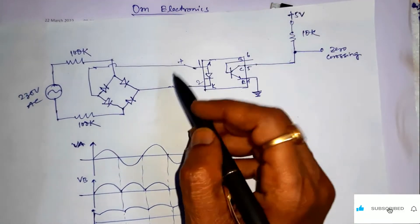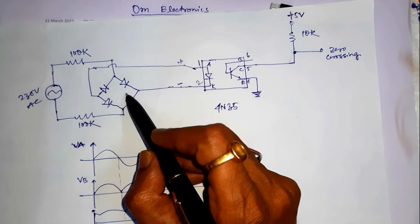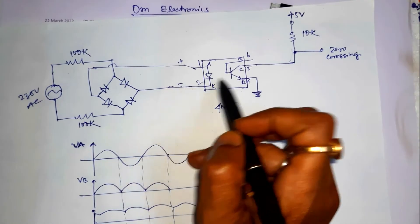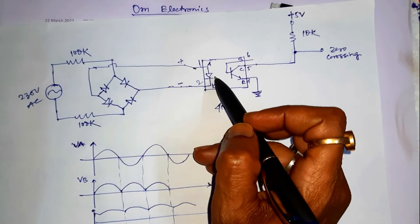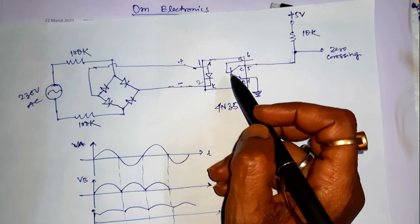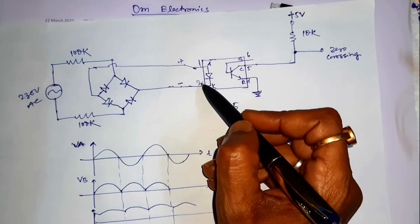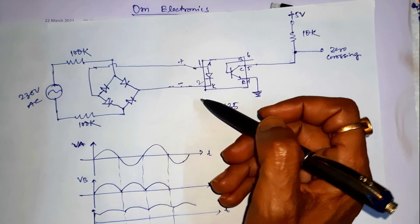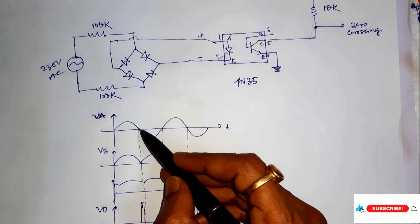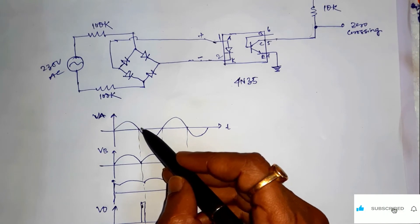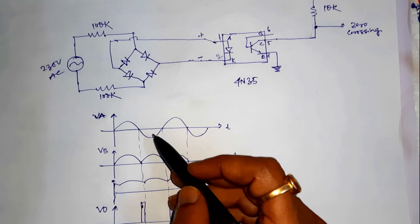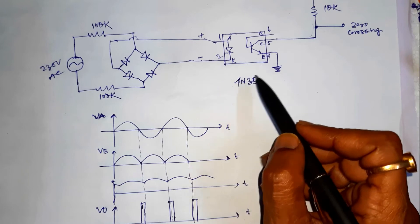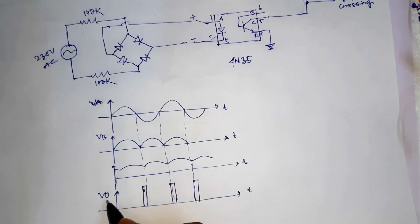The bridge rectifier converts AC to DC. The output of this bridge is fed to the optocoupler. The LED inside the optocoupler requires a minimum of one volt to turn on. When the AC wave goes near to the zero crossing — that is below 1 volt — the LED will turn off. As a result, the output transistor will turn off and pull up to 5 volts. This is the output voltage waveform.